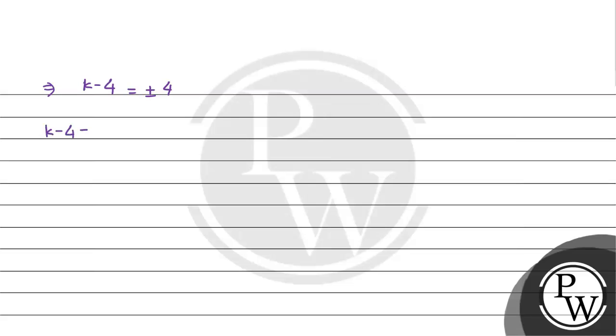It can be that k minus 4 is equal to plus 4 or k minus 4 is equal to minus 4. So k is equal to 8 or k is equal to 0. Therefore the final answer is k is equal to 0 comma 8.